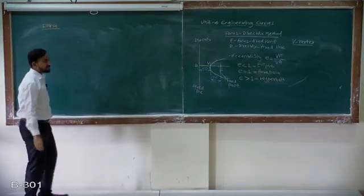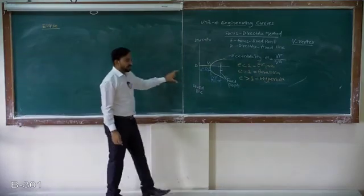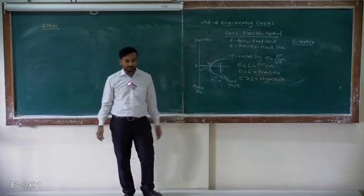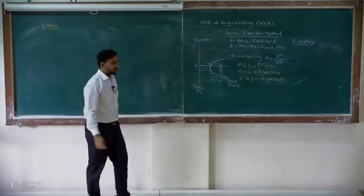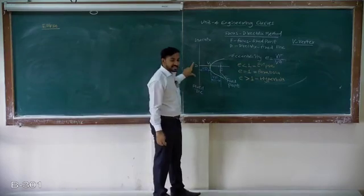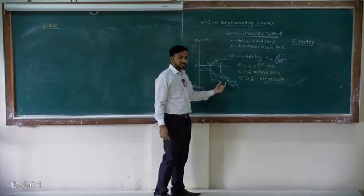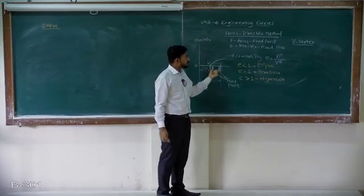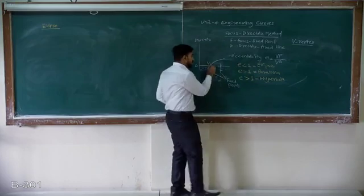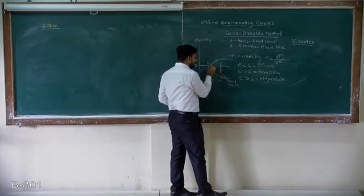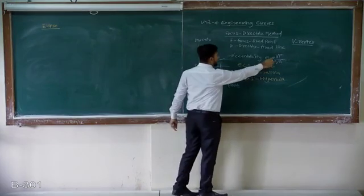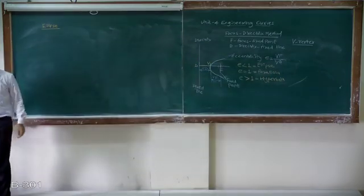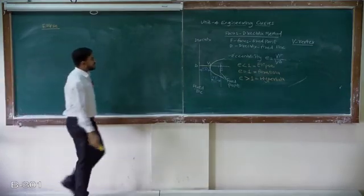This is a short summary and basics of the focus directrix method. Directrix is a fixed line, focus is a fixed point, and the vertex is a point on the curve taken as a reference for defining eccentricity. The ratio of vertex to focus distance over vertex to directrix distance — VF by VD — is eccentricity. Now we'll see one problem on the focus directrix method for an ellipse.